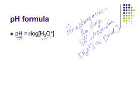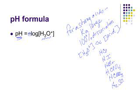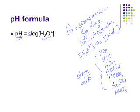But if it's a strong acid, you guys know all your strong acids — things like HCl and the other common strong acids. If you know the concentration, you can calculate the pH with this formula, so make sure you know this.